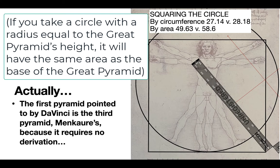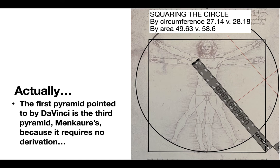But these do not square the circle. If you take the circumference, it's 27.14 versus 28.18. That's not squaring the circle. Those aren't equal. If somebody owes you $28 and they pay you $27, you're not even. And by area, if you go by area, again, if somebody owes you $58 and they give you $49, you're not square. So, da Vinci's square and circle do not square the circle by either of the two accepted methods, by circumference or by area.